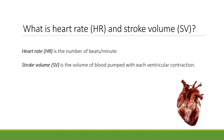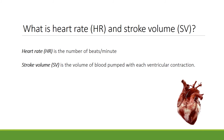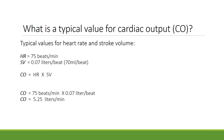Heart rate and stroke volume are two very important factors in blood pressure. Your heart rate is the number of times your heart beats each minute, and your stroke volume is the volume of blood pumped with each ventricular contraction. An average heart rate is somewhere around 75 beats a minute, and stroke volume on average is about 0.07 liters per beat, or 70 milliliters per beat.